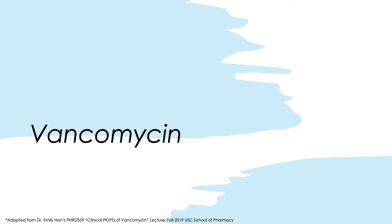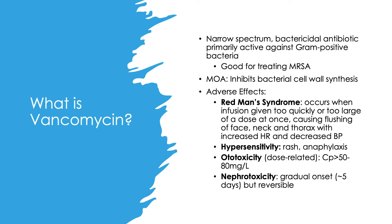Now I'll go into vancomycin dosing, also adapted from Dr. Hahn's lecture. Vancomycin is a narrow-spectrum bactericidal antibiotic primarily active against gram-positive bacteria with no activity against gram-negative bacteria. It is one of the mainstays of treatment for MRSA — methicillin-resistant Staphylococcus aureus. It inhibits bacterial cell wall synthesis. However, it has many adverse effects including Red Man syndrome, which occurs when infusion is given too quickly or at too large a dose, causing flushing of the face, neck, and thorax with increased heart rate and decreased blood pressure. Hypersensitivity reactions ranging from rash to anaphylaxis may also occur, as well as dose-related ototoxicity and nephrotoxicity with gradual onset around 5 days that is reversible.